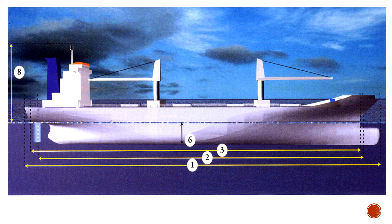Number eight is the air draft. The air draft is the vertical distance between the waterline and the highest point of the ship. The air draft is measured from the summer mark. If the ship has less draft, one can ballast until it reaches the summer draft to obtain its minimum air draft.